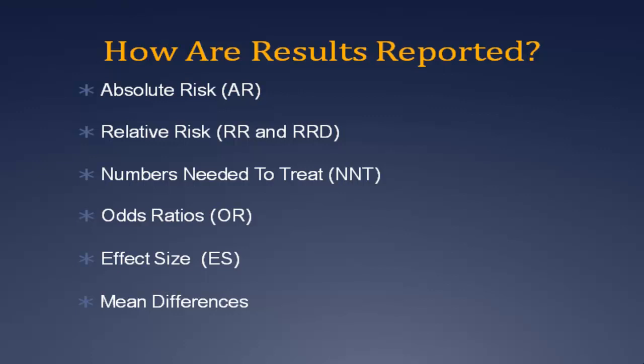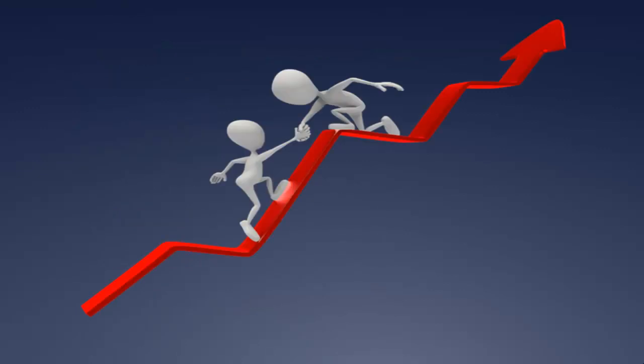The vocabulary list includes: absolute risk, relative risk, numbers needed to treat, odds ratios, effect sizes, and mean differences. Sounds daunting — don't worry. The math involves either simple division or subtraction, and is now automated through online calculators. Also know that these terms are, for the most part, mathematically related. But even before the math, you'll be able to understand the meaning and usefulness of these words.